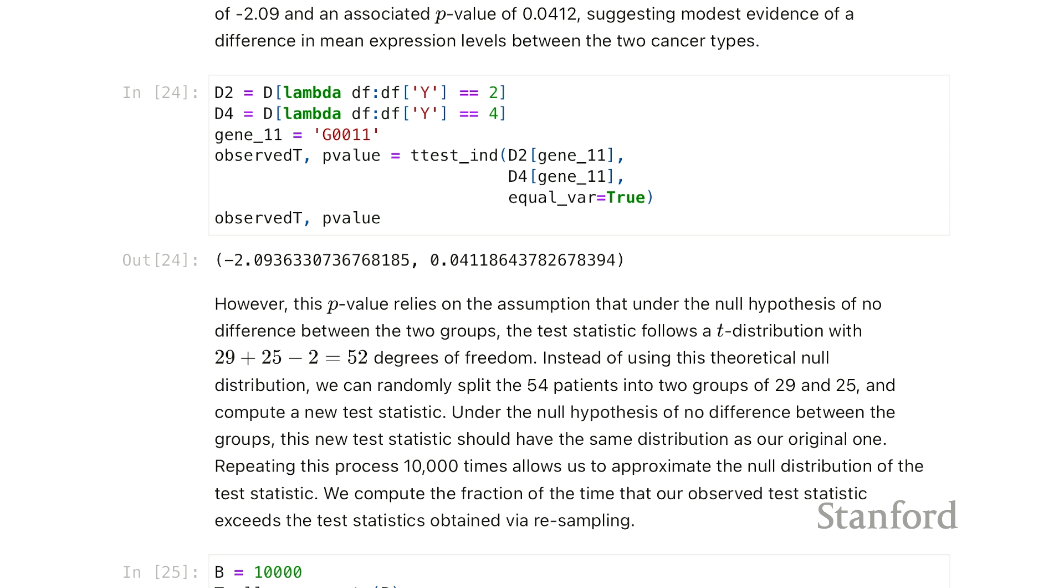So this decision about which class to compare is something that a researcher might will have made beforehand and we want to compare the microarray or the genetic data at gene 11 for the y equals two group and the y equals four group. And it constructs a p-value.